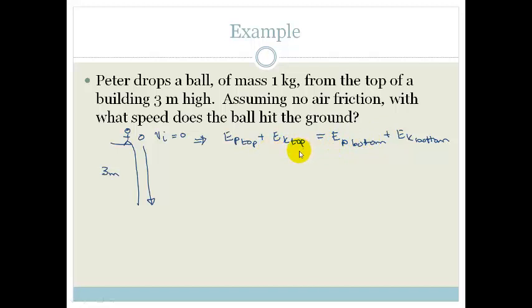Once we've done this, we can now fill things in. So, at the top we've got MGH plus 1 half MV squared equals MGH at the bottom plus 1 half MV squared. There is no kinetic energy at the top because the initial velocity is 0, so we can cancel that. So we've just got MGH equals, there is no potential energy at the bottom because we've hit the ground. So that goes away and you're left with a half MV squared.